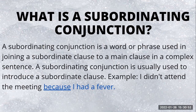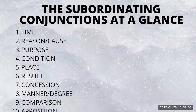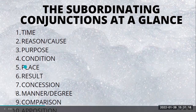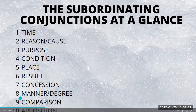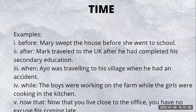We are going to look at 10 different types of subordinating conjunctions and examples of how to use them: time, reason, purpose, condition, place, result, concession, manner or degree, comparison, and opposition. Let's start with the subordinating conjunction of time.